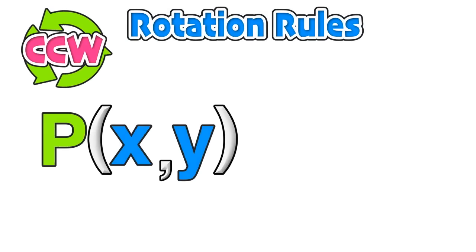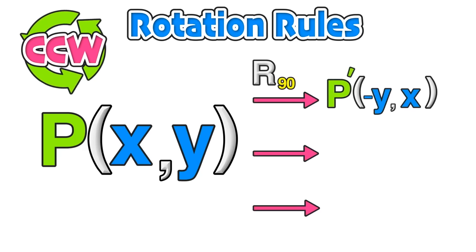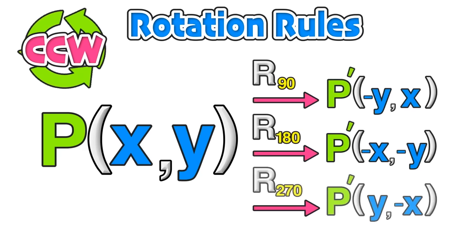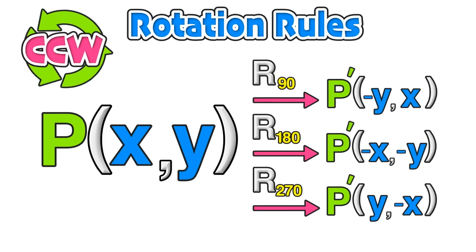In our last example we applied a very visual approach to rotating a point around the origin. However, there are rotation rules we can also apply. When rotating counterclockwise, for any point P with coordinates (x, y), there is a set of rules for each type of rotation to find the coordinates of the image. Those negative signs just mean to negate, or do the opposite, so positive values become negative and negative values become positive.